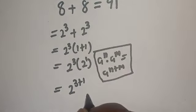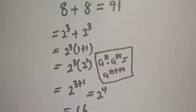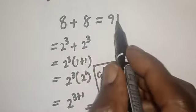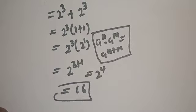Which is equal to 2 to power 4, and 2 raised to power 4 is equal to 16. But this question says 8 plus 8 is 91, and the answer we got here is 16. Let's see how that is going to be possible.